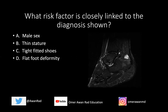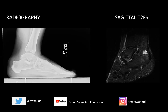What risk factor is closely linked to the diagnosis shown? Let's come back to the images. On the x-ray, first of all, there's no fracture or dislocation. This is a lateral view — here is the tibia, the fibula, the talus, and the calcaneus. I want to focus at the ankle, because notice we do have an osteophyte along the posterior calcaneus where the Achilles tendon inserts. More superiorly along the posterior superior calcaneus, there's a focal spike or osseous protuberance. That's an important finding.